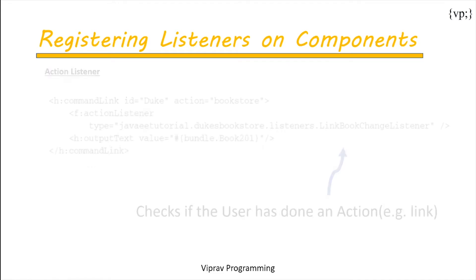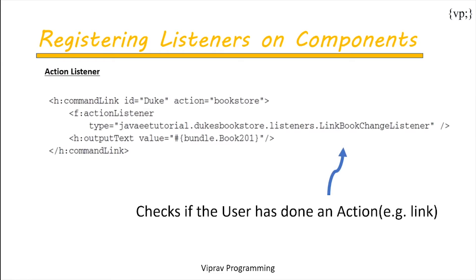Then there's registering an action listener, which is similar to the value listener above, but this one checks if the user has done an action — for example, clicking a link — and then runs the listener that we've written.